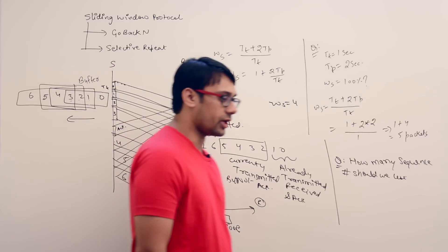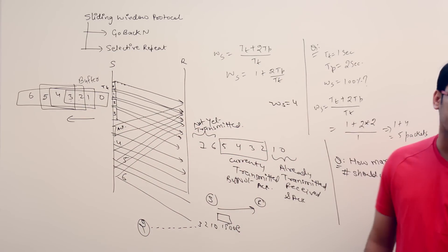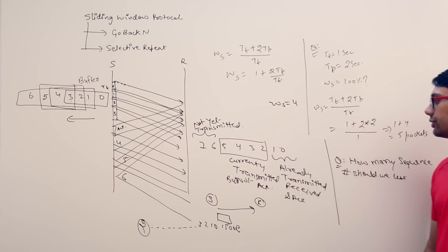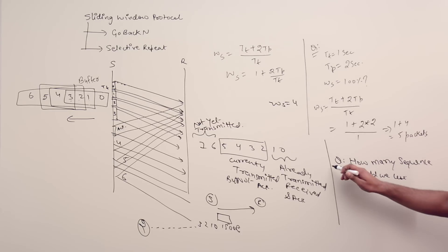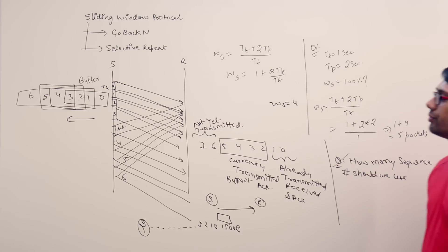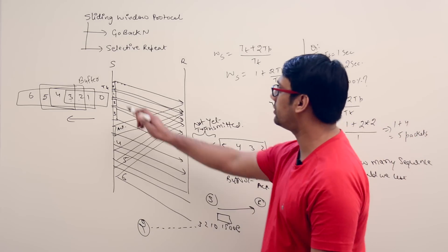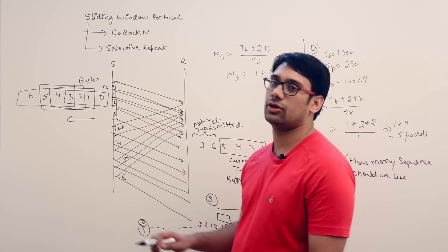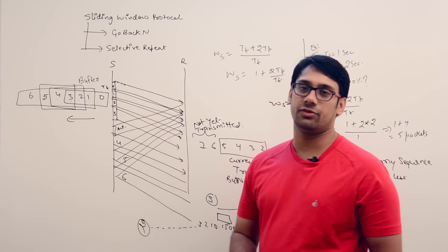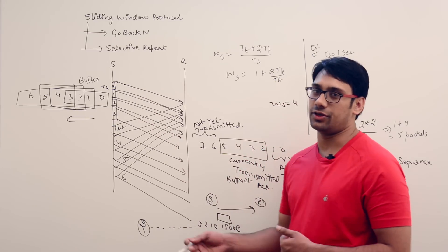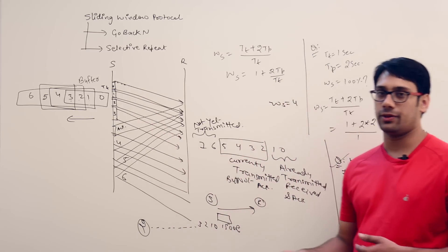So we need a sequence number field that has an upper bound — at maximum you should use this many sequence numbers — so that communication remains effective. In the sliding window protocol, we cannot use an infinite number of sequence numbers; we can only use a finite number, and we need to identify what that number should be.